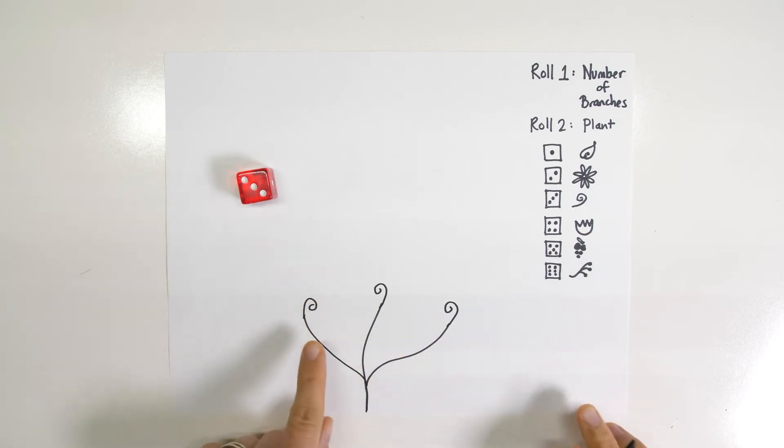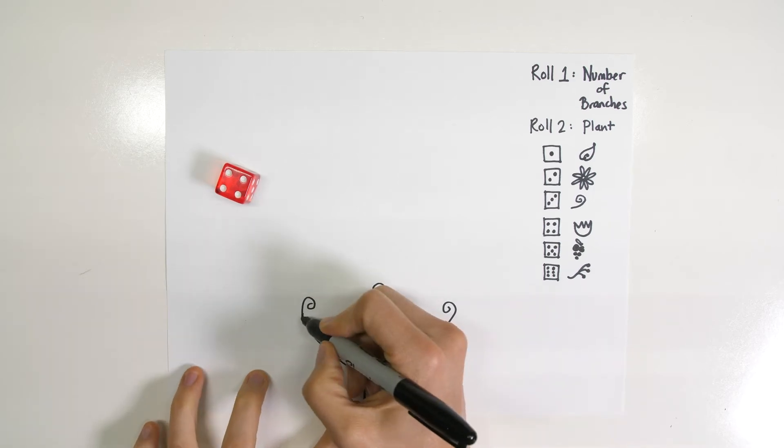Okay, so now I have this first level and I'm going to roll to see what's going to come off of this particular branch. So I'm going to make four branches off of that one.